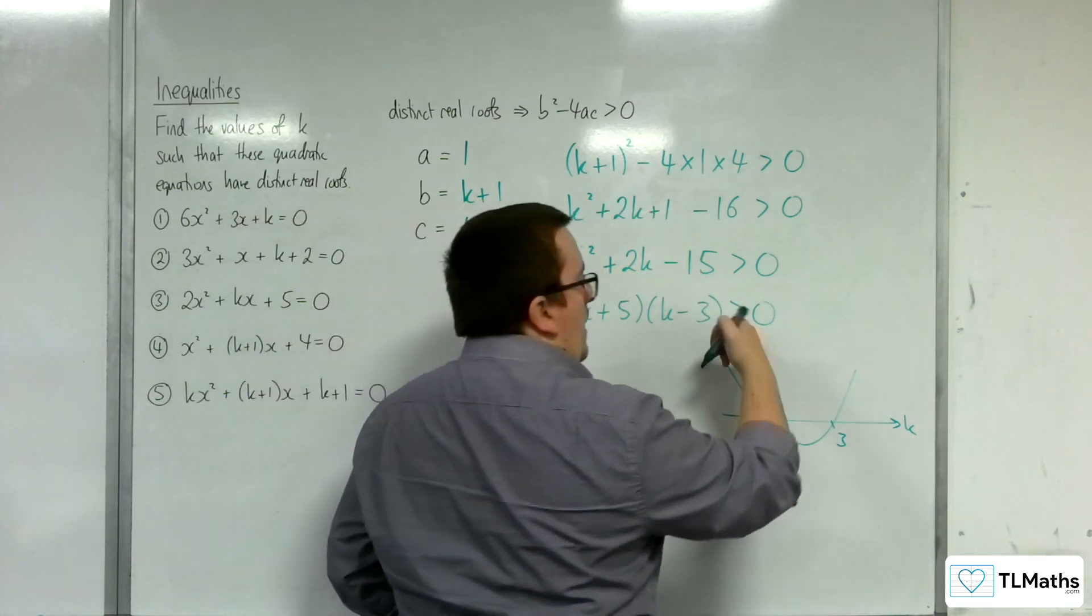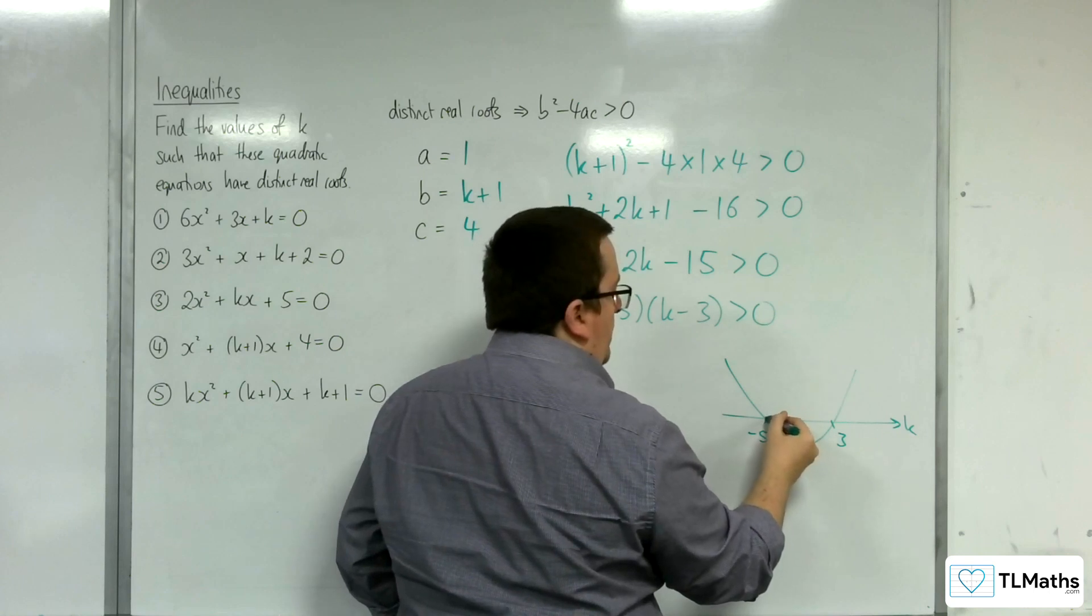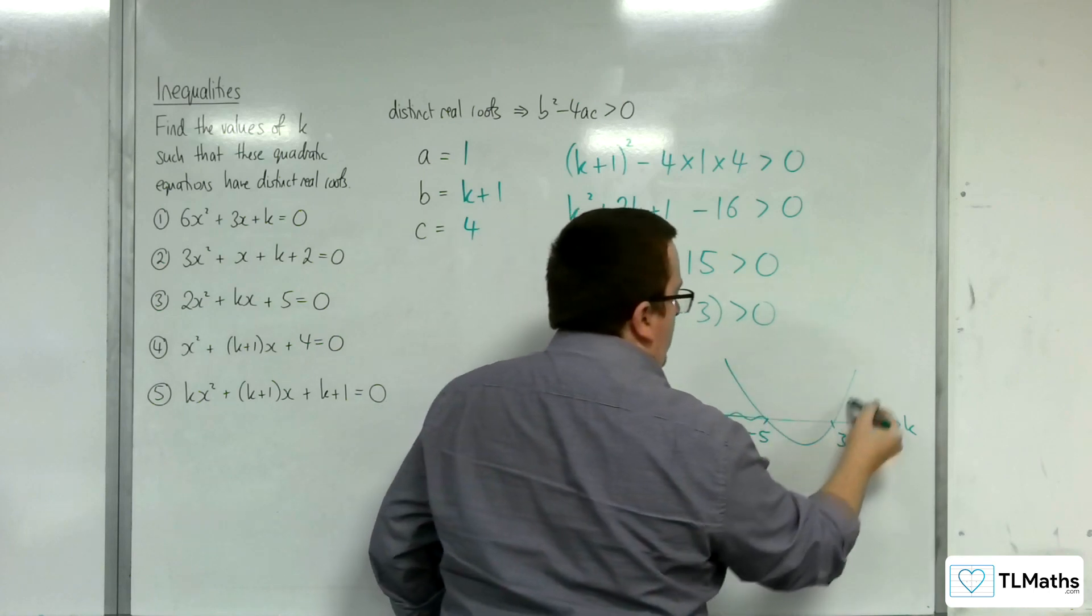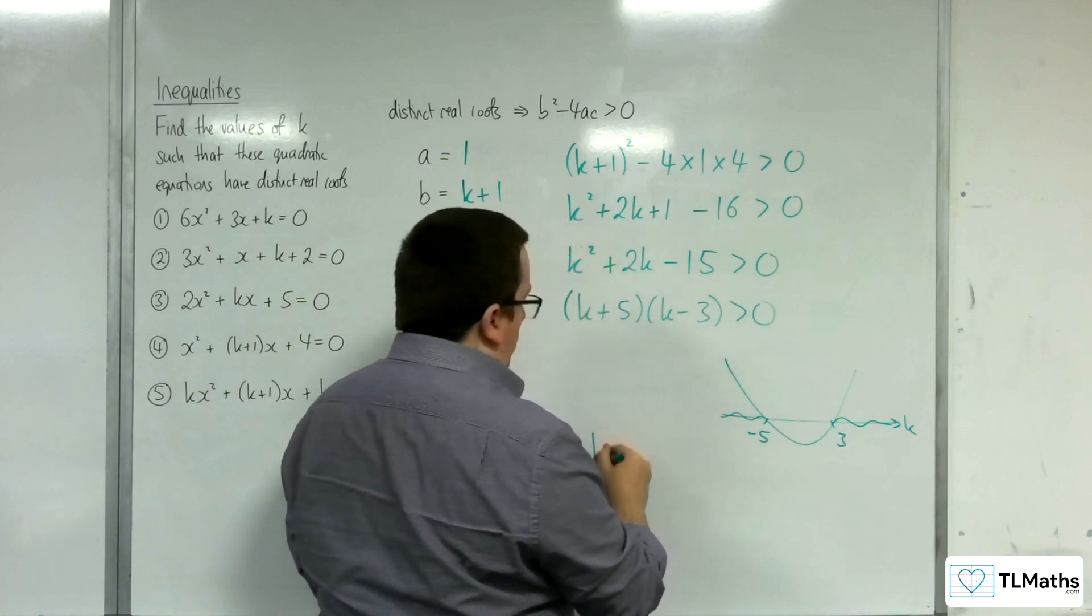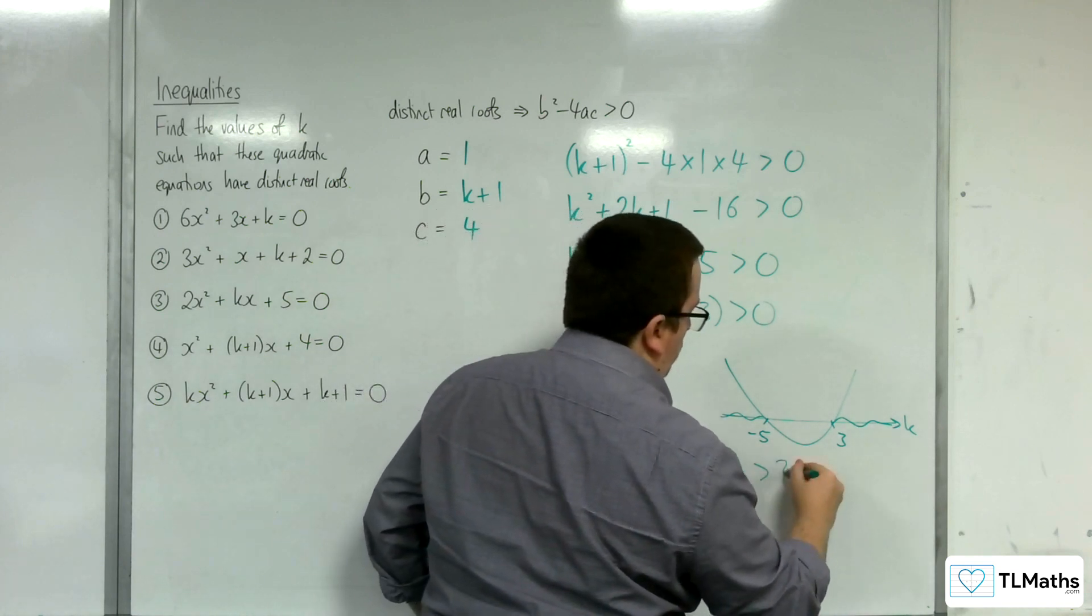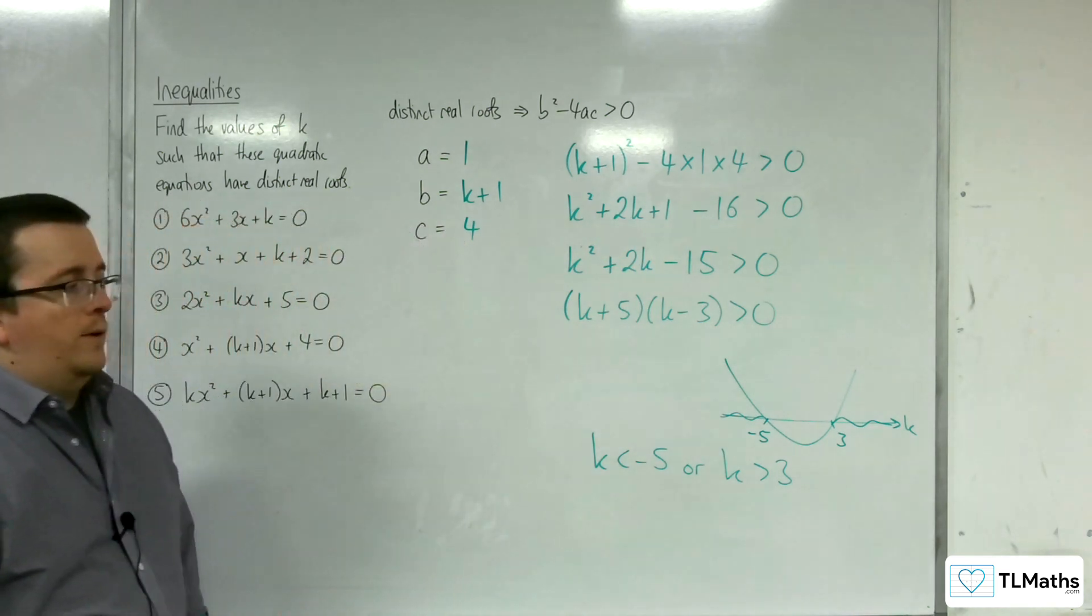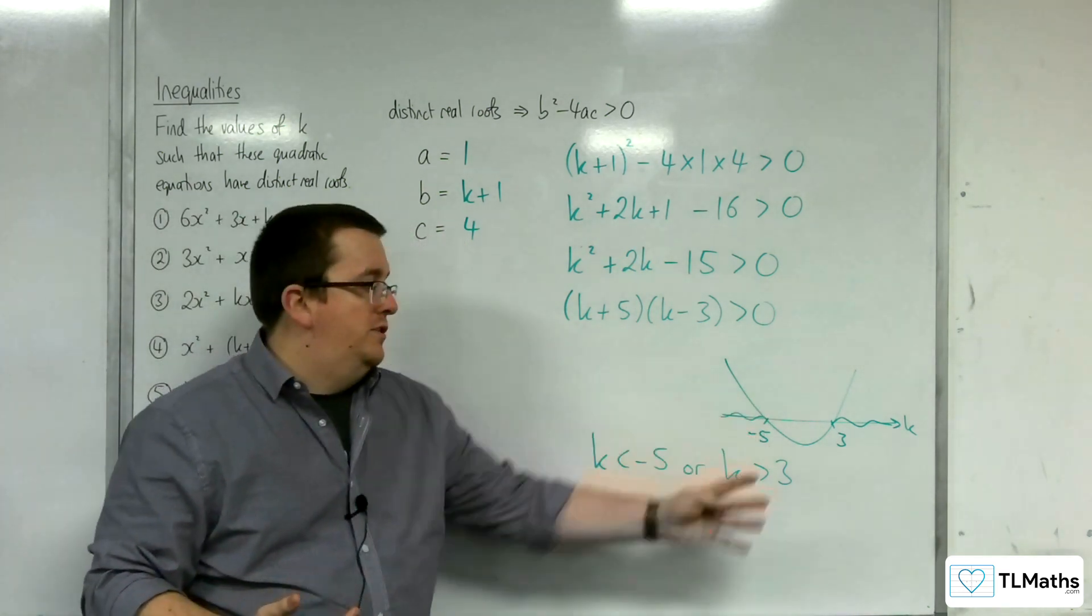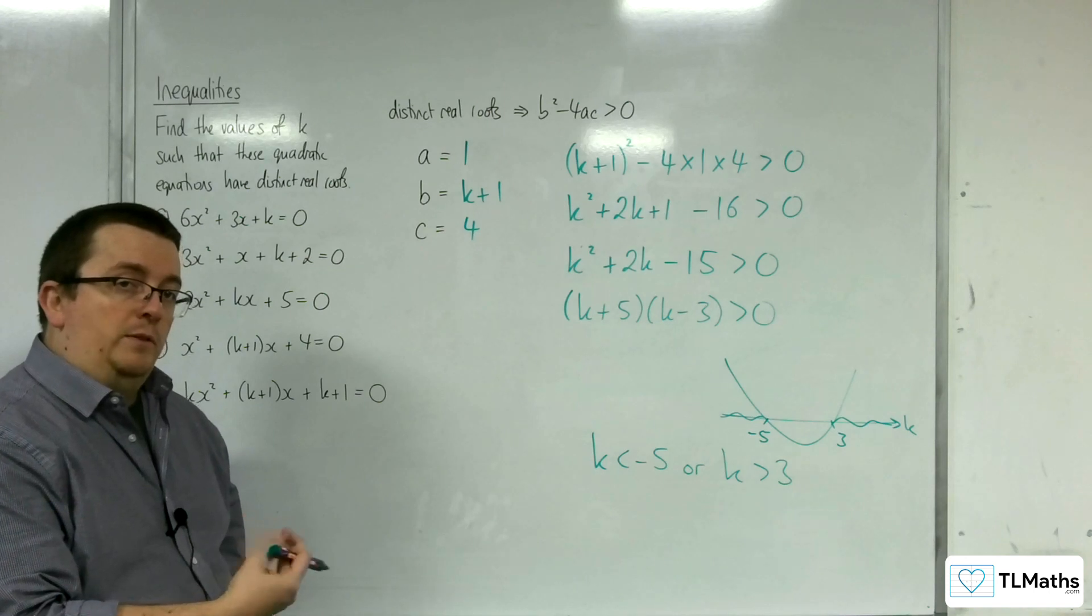Where is the parabola above the k-axis? It's above it there, and there. So, k would have to be less than negative 5, or k would have to be greater than 3. Two regions, two inequalities, just as it was in the previous example.